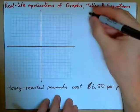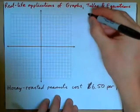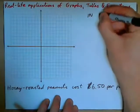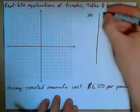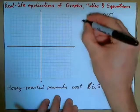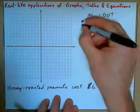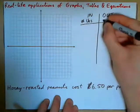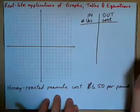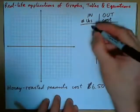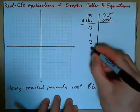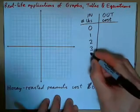We're going to do an input-output table. Inputs will be number of pounds, and outputs will be cost. So if we buy 0 pounds, 1 pound, 2 pounds, 3 pounds, 4 pounds.